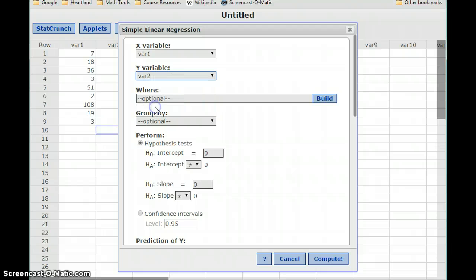We'll again select our two variables, and for now we'll just leave the rest of this blank. We just need to select those two variables, and click Compute.